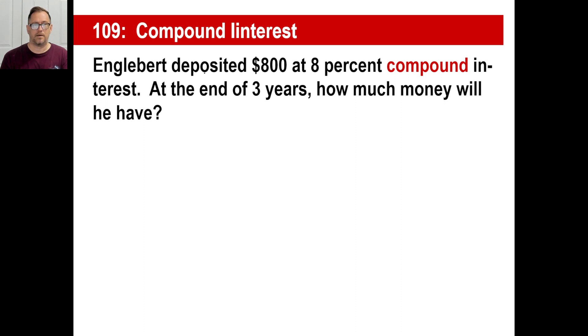Engelbert deposited $800 at 8% compound interest. At the end of three years, how much money will he have? Well, what happens here is that Engelbert at the end of one year will earn 8% interest, right? So he starts with $800 at the end of year one, the interest he earns will be $64, right? Because 8% times 800 is that. So at the end of year one, so his total is going to be $864, right? Now at the end of year two, he's not only going to earn 8% interest on the 800, he's now going to earn the 8% interest on that.